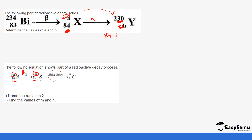After the alpha decay, the mass number will reduce by four, so the value of M will be 234 minus 4 which gives us 230. The atomic number is going to reduce by two, which gives us the value of N as 89.